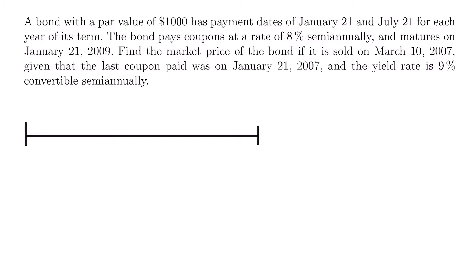Let's draw a timeline. The last coupon was paid on January 21st, 2007 — that's my first mark. We want to identify when the last coupon was paid, when we want to calculate the price, and when the next coupon would be paid. The last coupon was paid on 1-21-07, and following the coupon dates from the problem, the next coupon would be paid on July 21st, 2007 — labeled 7-21-07 — as the other endpoint of this timeline.